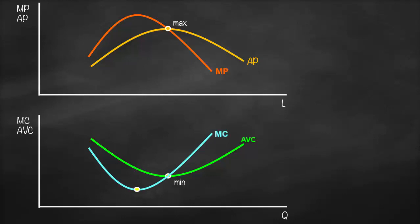The point of minimum marginal cost corresponds to the maximum of marginal product. This is how we compare average product and marginal product with average variable cost and marginal cost.